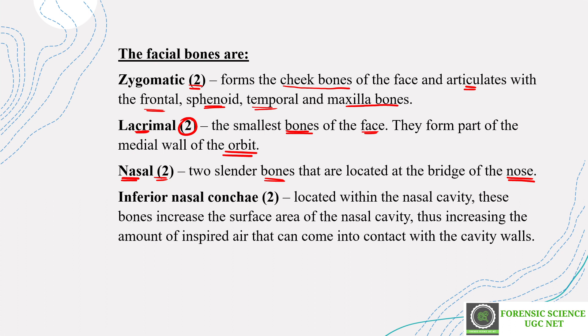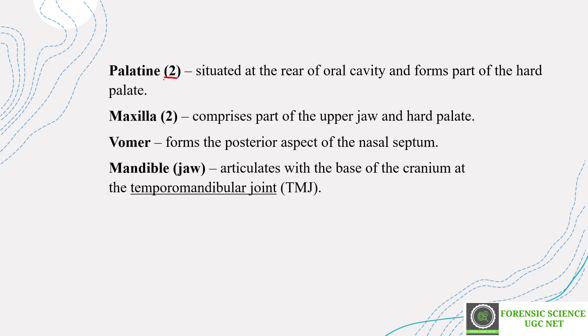Next are the nasal bones — two slender bones located at the bridge of your nose. Then the inferior nasal conchae, again two in number, located within the nasal cavity. These increase the surface area of the nasal cavity and increase the amount of inspired air that can contact the cavity wall. Next are the palatine bones, two in number, situated at the rear of the oral cavity forming the hard palate. Then maxilla — the upper jaw — again paired, comprising part of the upper jaw and hard palate.